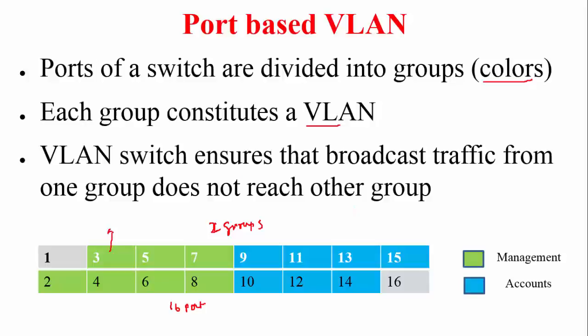For example, if port 3 sends a broadcast packet, the switch knows that ports 2, 4, 5, 6, 7, and 8 belong to that group, so it forwards the broadcast packet out on each of those ports. It will not send it on any ports belonging to the other color group. Similarly, if a node from the blue group sends a broadcast, it goes only to ports of the same color.